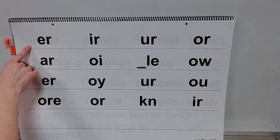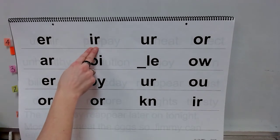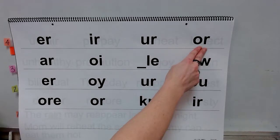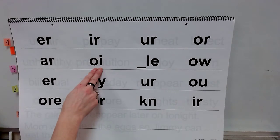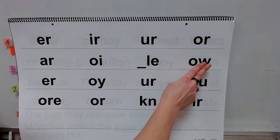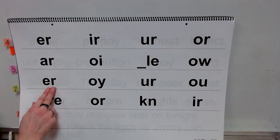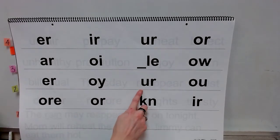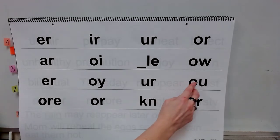Now you'll practice saying the sounds for some spellings. Sound: er. Sound: er. Sound: or. Sound: our. Sound: boy. Sound: all. Sound: ow. Long sound: oh. Sound: or. Sound: er.